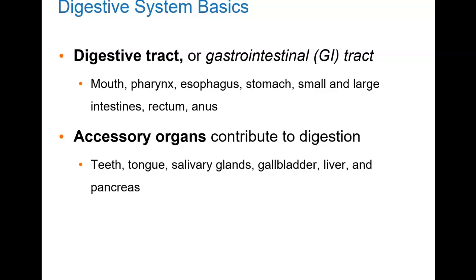The digestive system is made up of two categories of organs. There are the organs that make up the GI tract, which are organs where food physically passes through: your mouth, your pharynx, your esophagus, your stomach, small and large intestines, rectum, and anus.